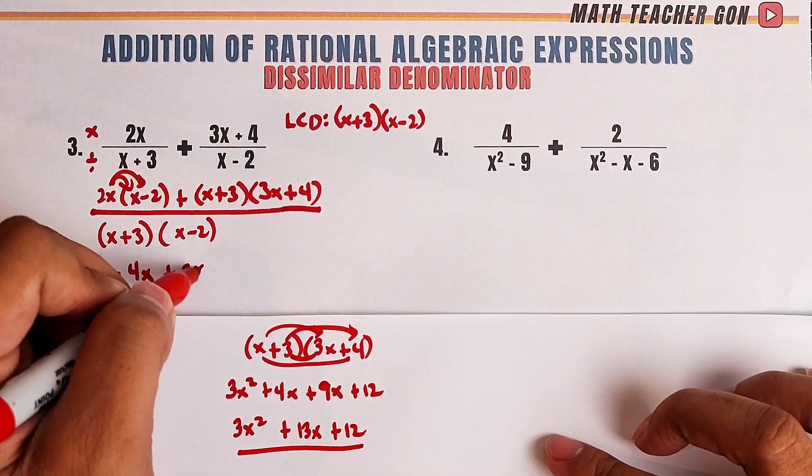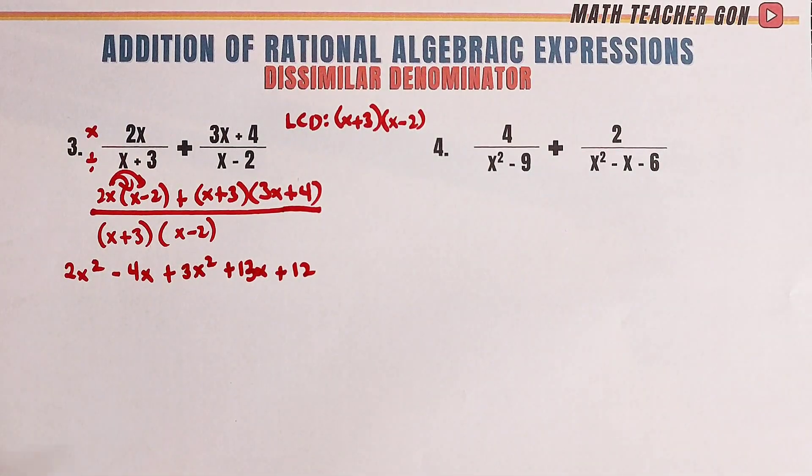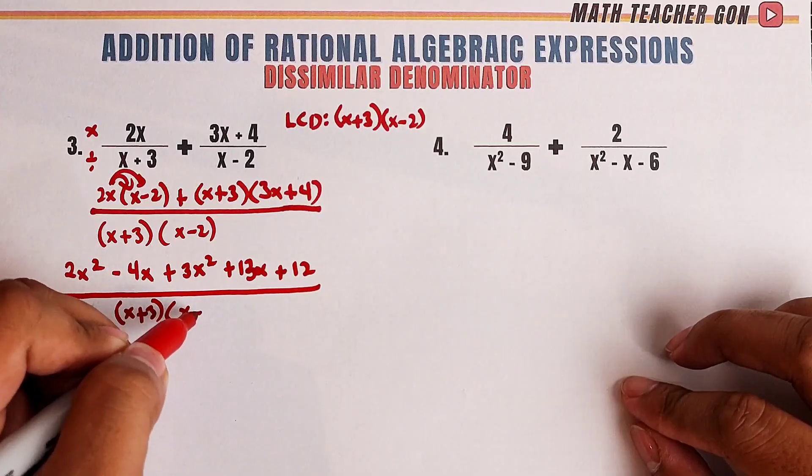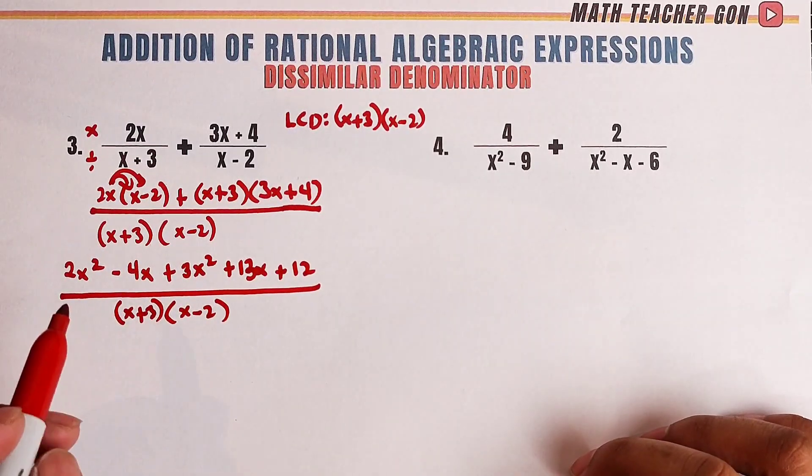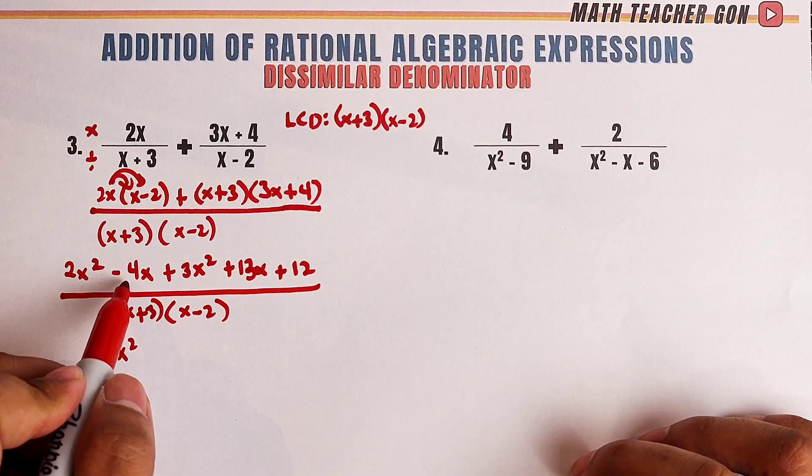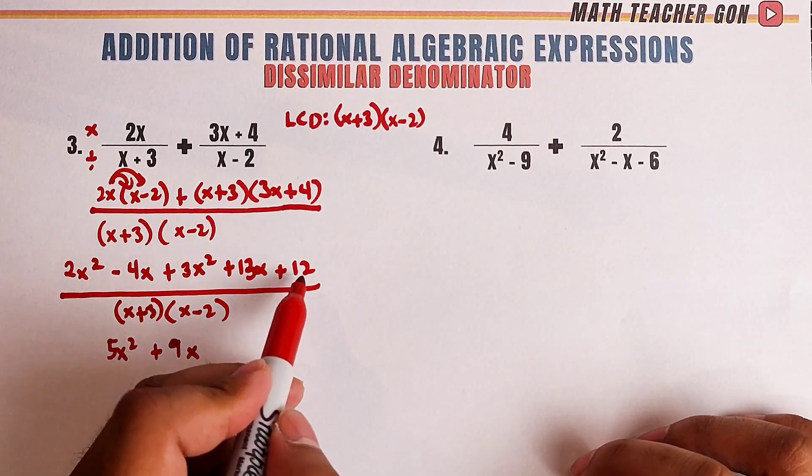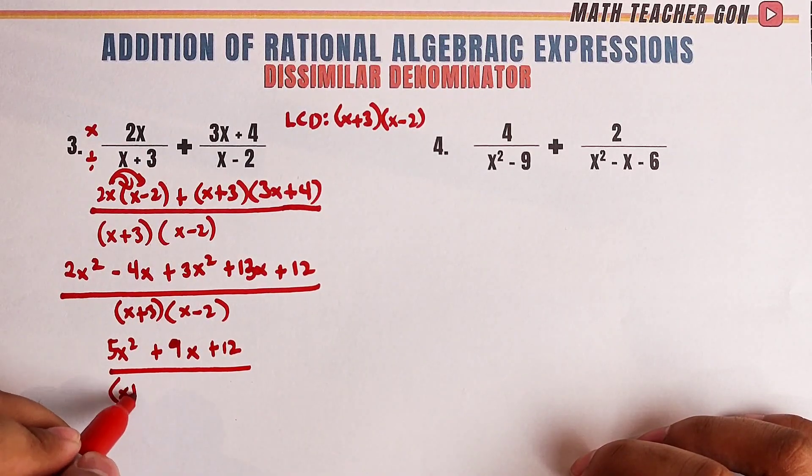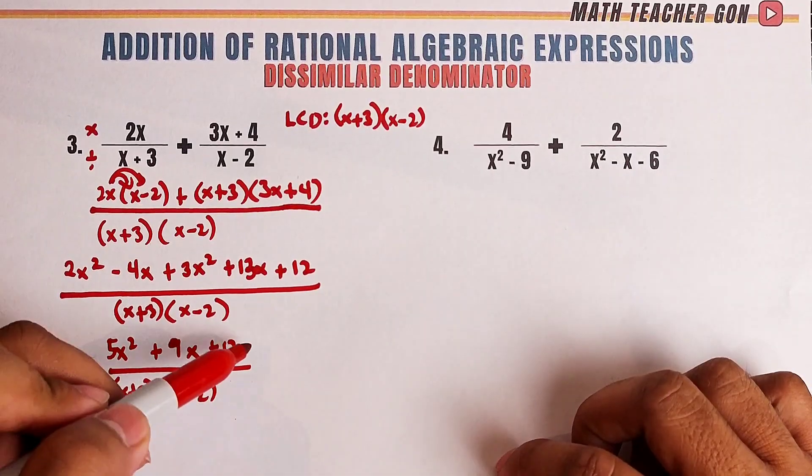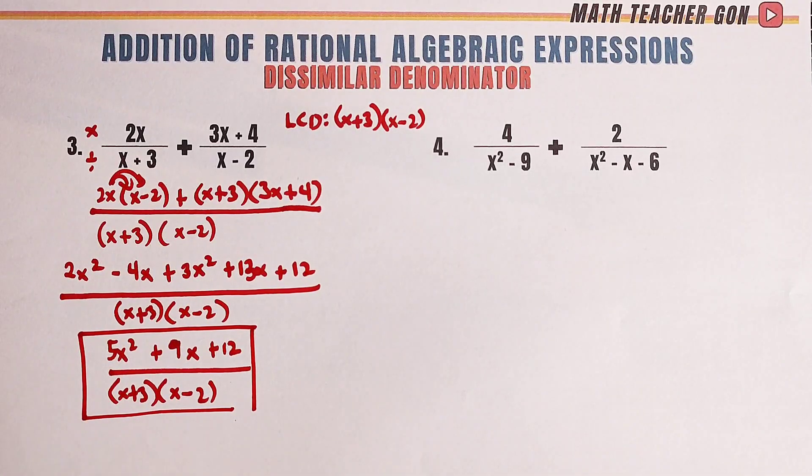So, that would be plus 3x squared plus 13x plus 12 over your denominator x plus 3 times x minus 2. Now, we will combine like terms. We have now 2x squared and 3x squared that would be 5x squared then negative 4x plus 13x that would be plus 9x plus 12 over x plus 3 times x minus 2. Can we factor anything? No. So, we can declare that the correct answer for item number 3 is simply 5x squared plus 9x plus 12 over x plus 3 times x minus 2.